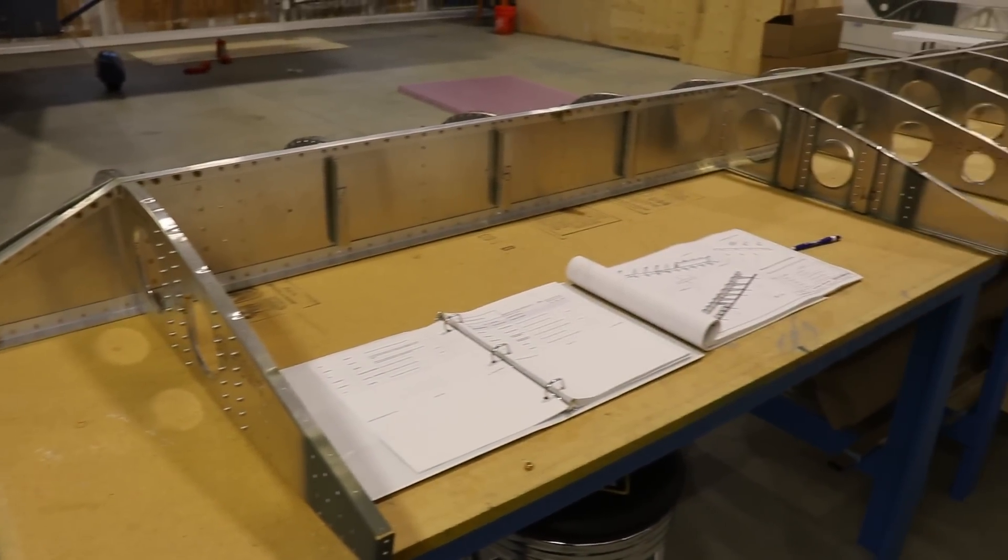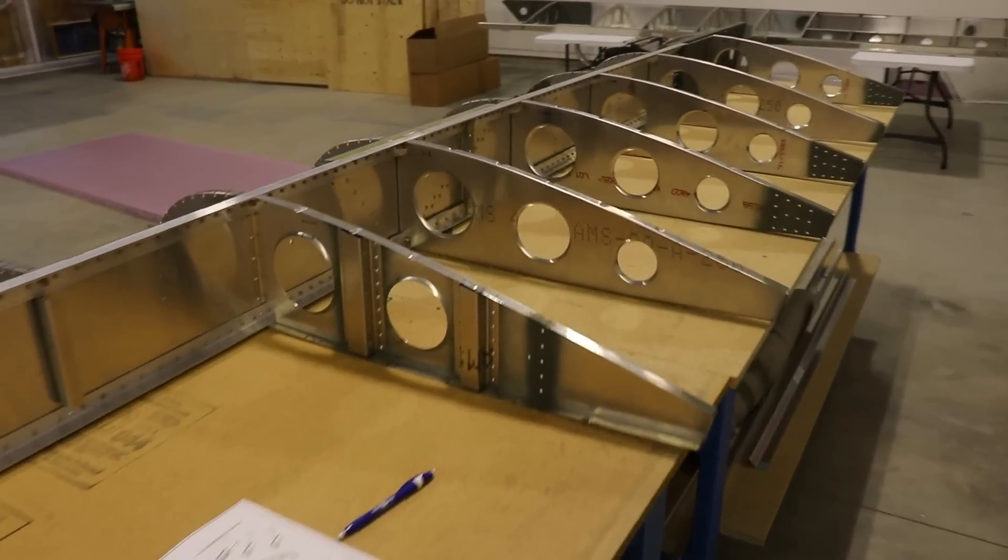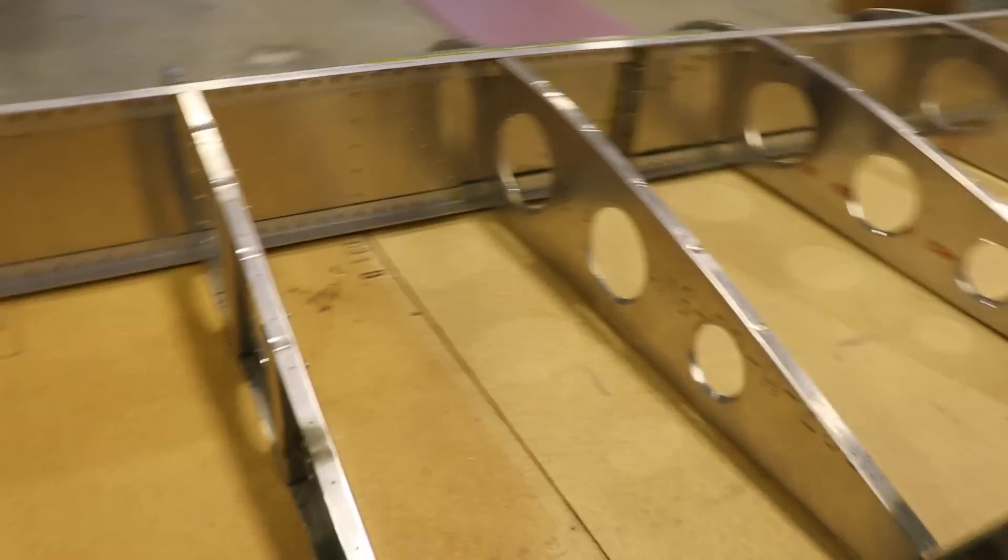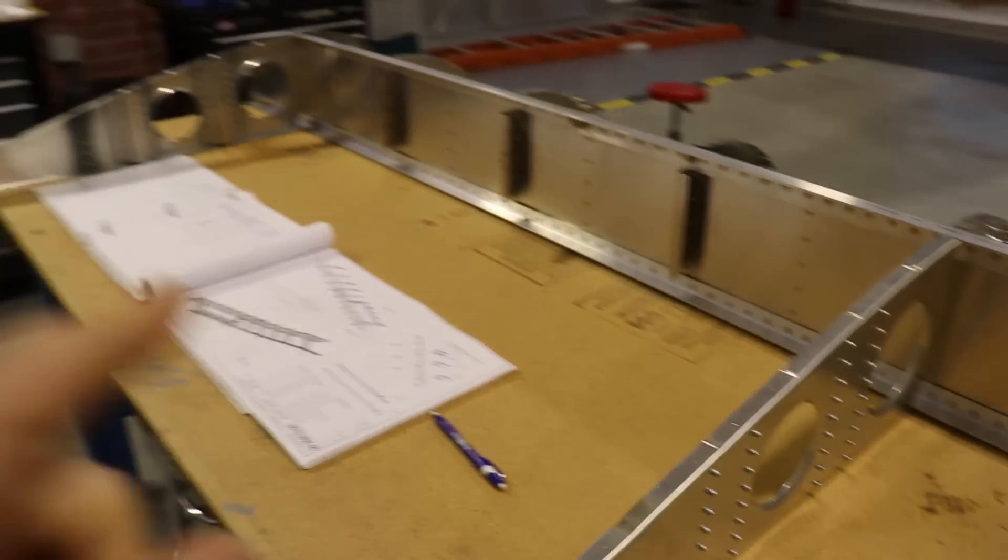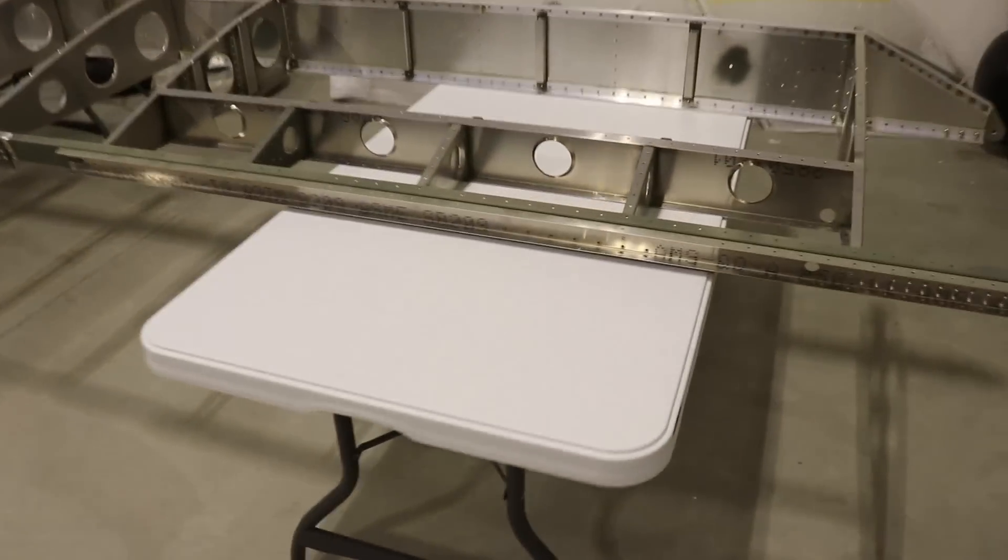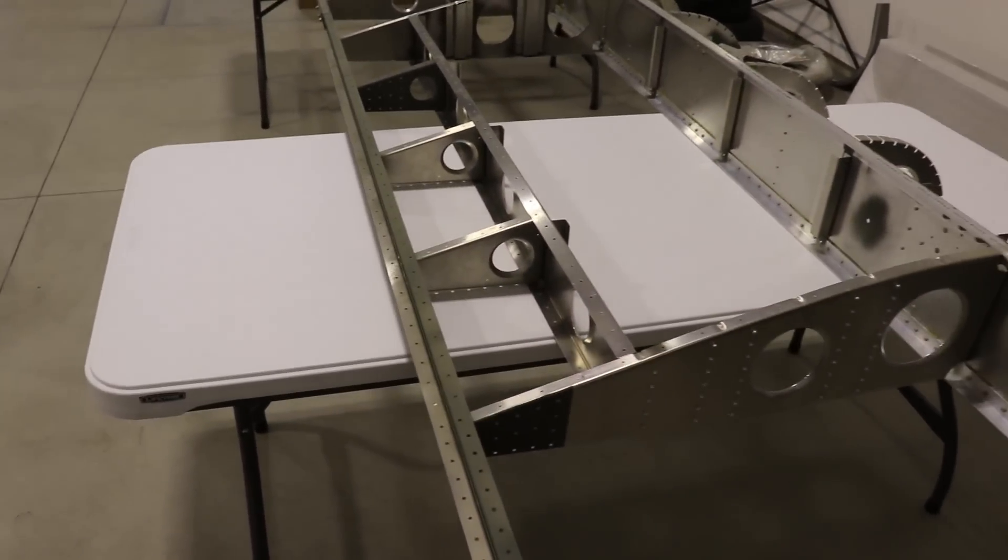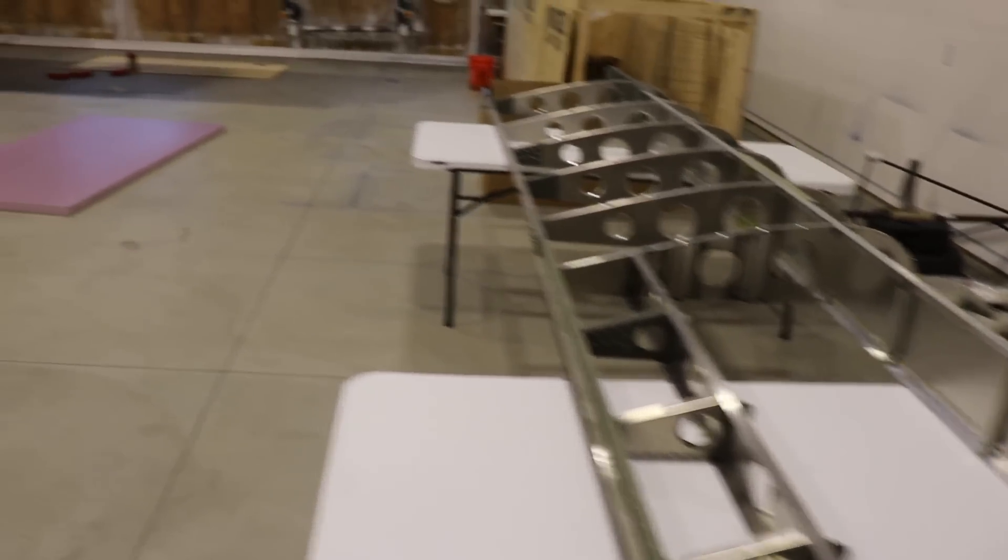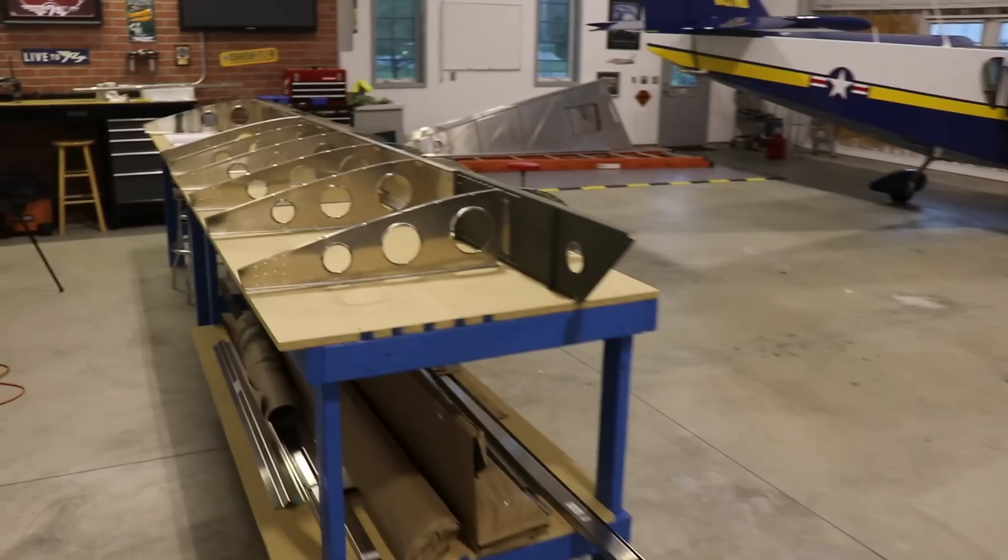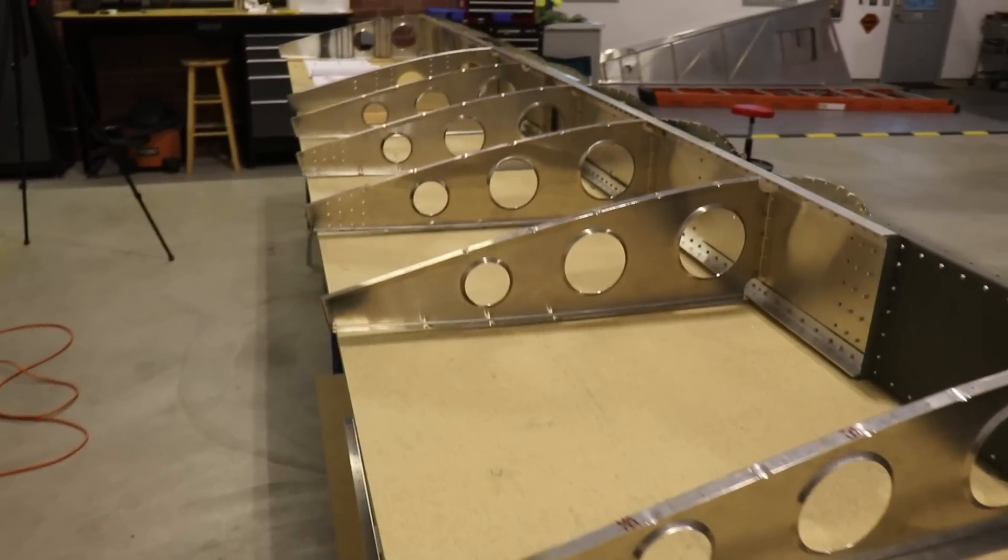All right, you have just seen me rivet on a rib and I now have all of these ribs riveted together. So next time we will start building up the rear spar here with the little ribs and we will get this wing caught up to this wing. You can see this wing here has the rear spars and sub spar already together. So on the next video we will get this wing caught up and then we are ready for wing skins.